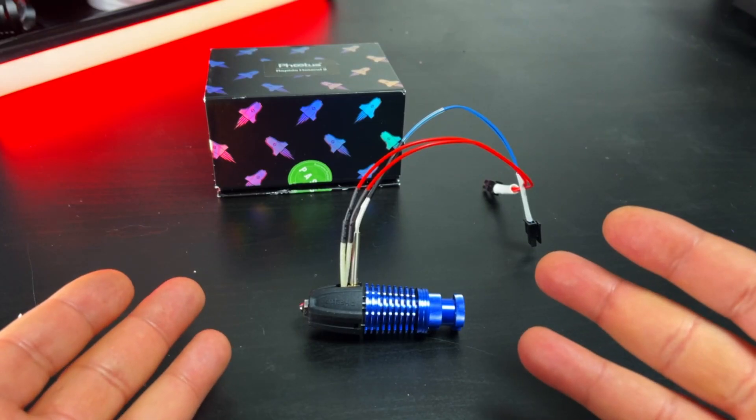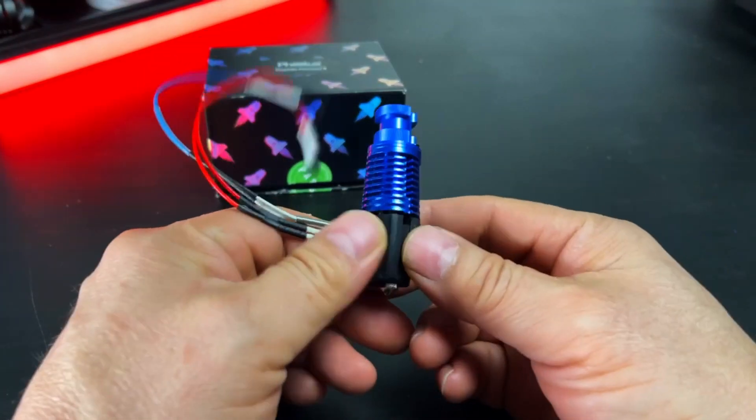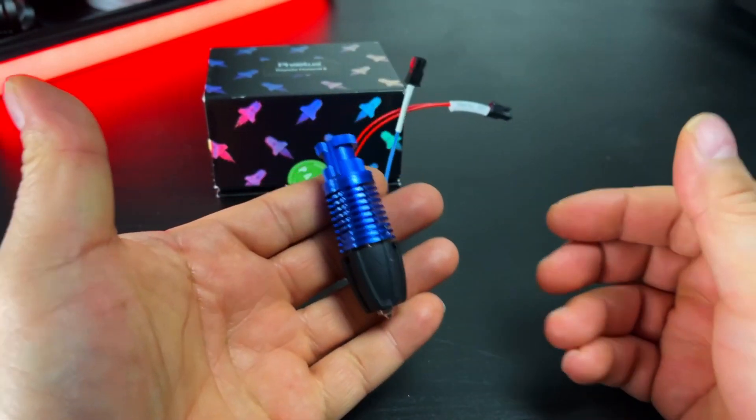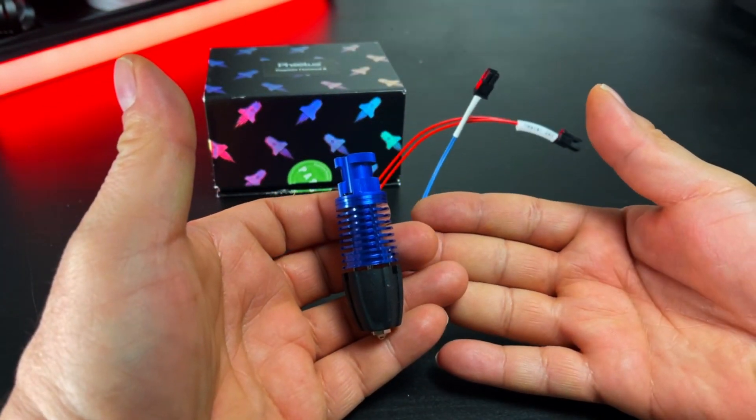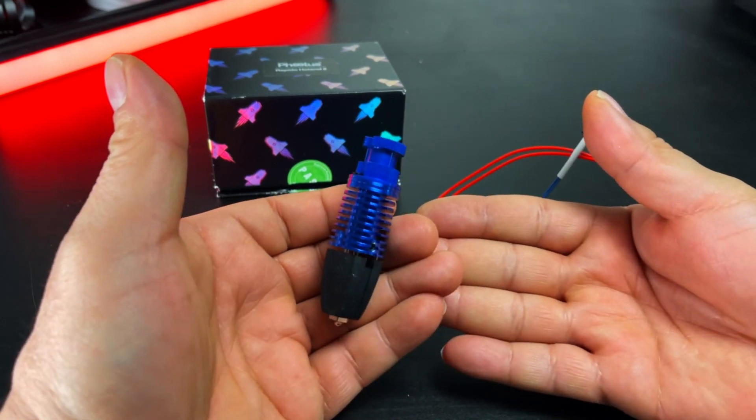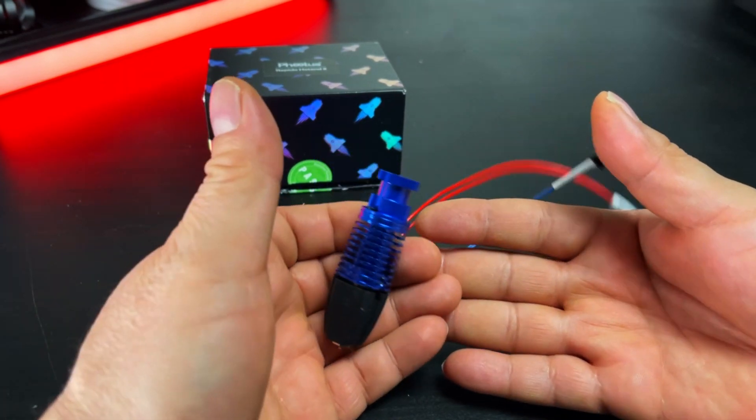This is Rapido 2.0. This looks exactly, if I held it like this, like the Rapido 1.0, but this is the 2.0 version. What is different about this?